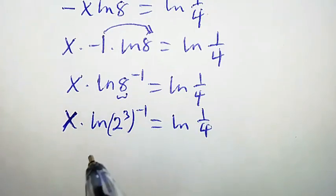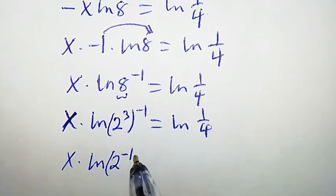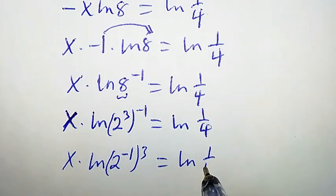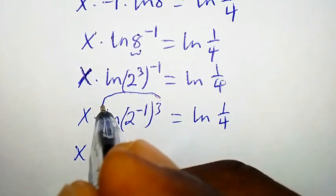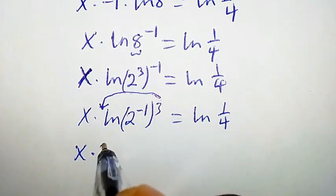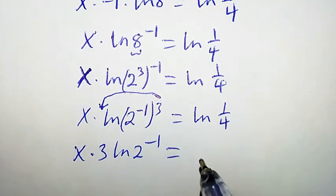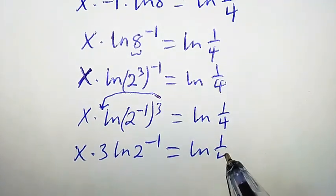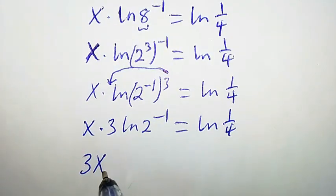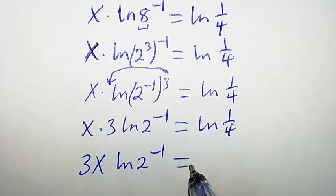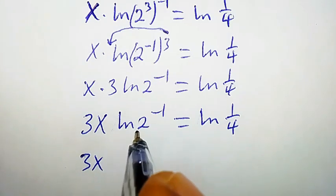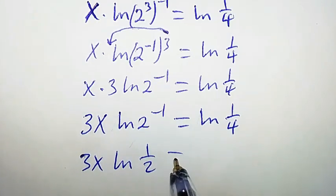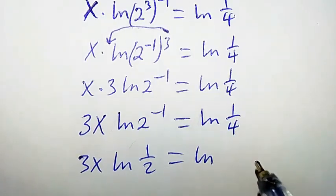Writing 8 as 2 to the power of 3 and applying the logarithm rules, x times ln(2 to the power of negative 1) times 3 equal to ln(1/4). This becomes 3x times ln(2 to the power of negative 1) equal to ln(1/4), which is 3x times ln(1/2) equal to ln(1/4).